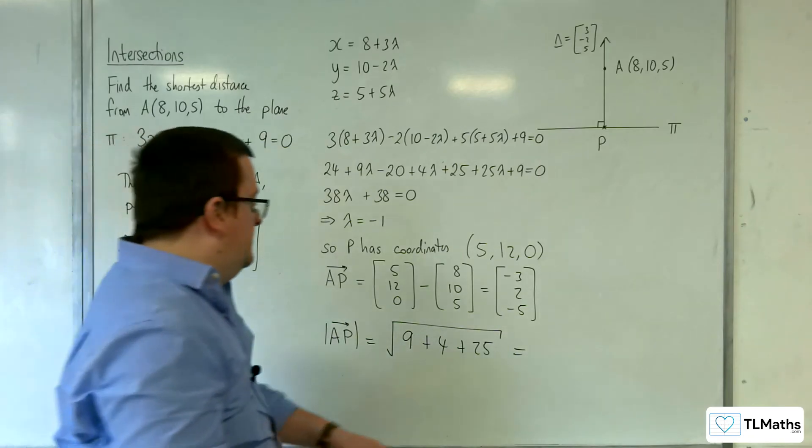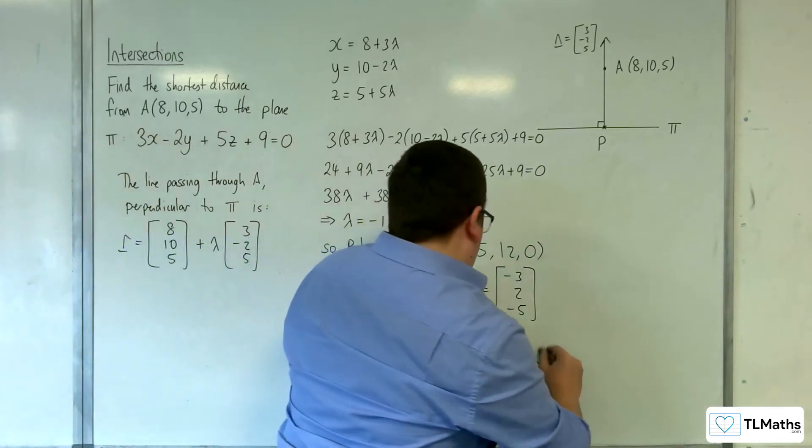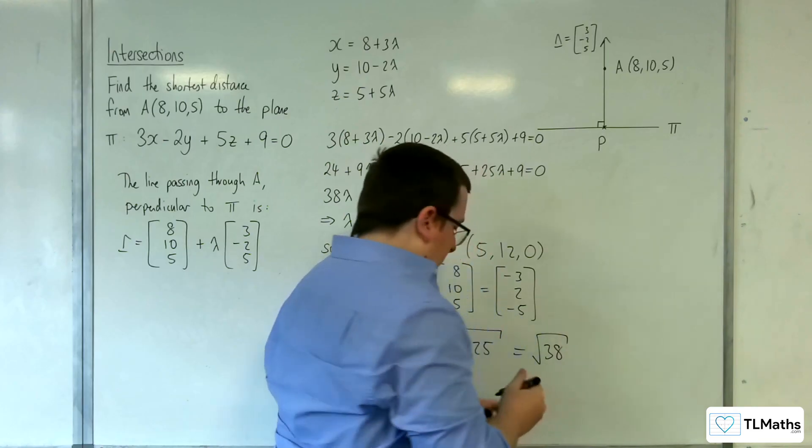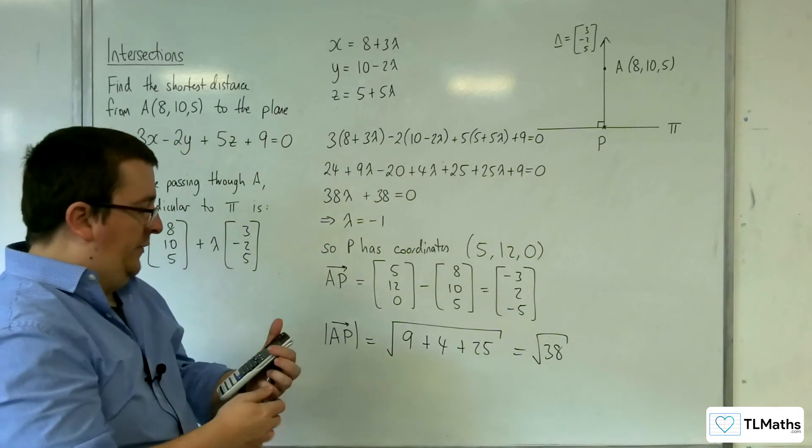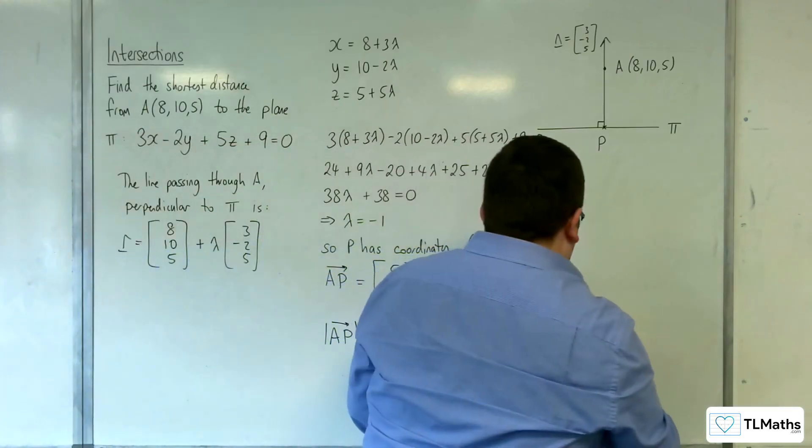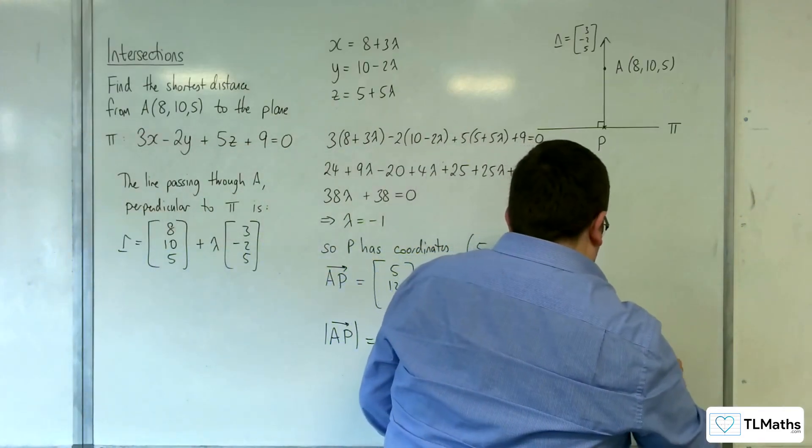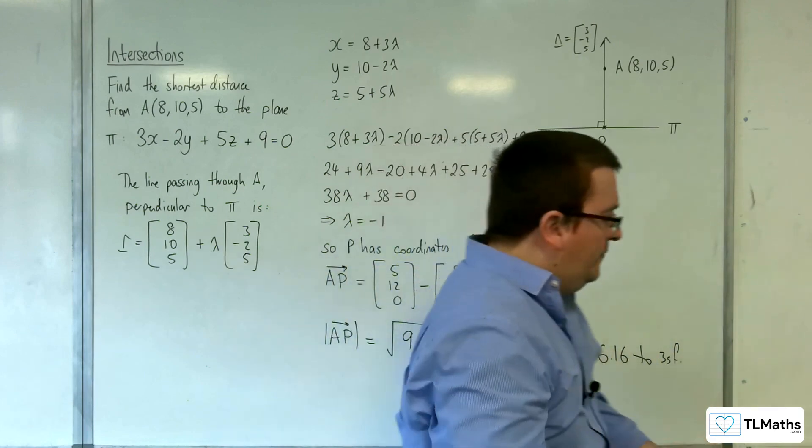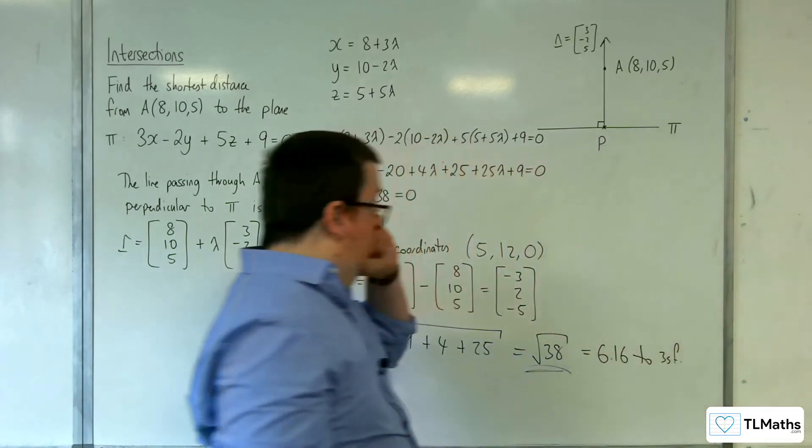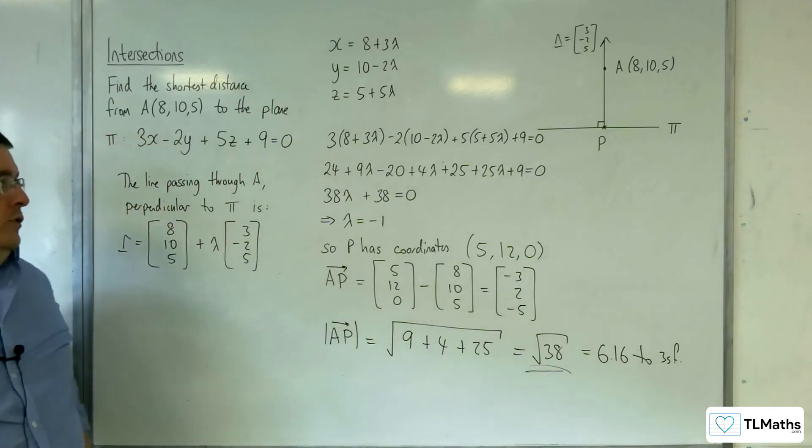Okay, so that's √38. So that is 6.16 to 3 sig fig, but √38 is the exact distance from the point to the plane.